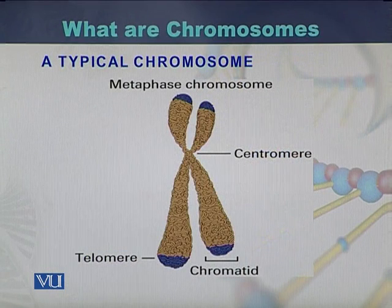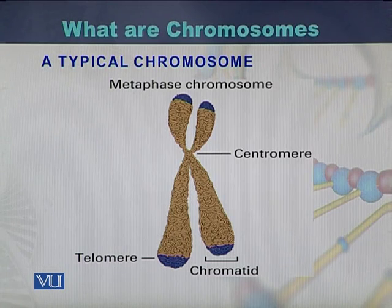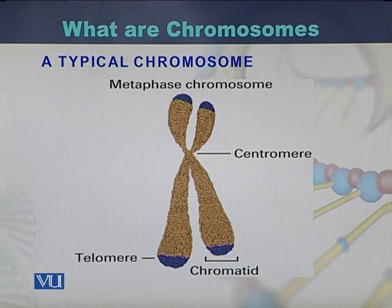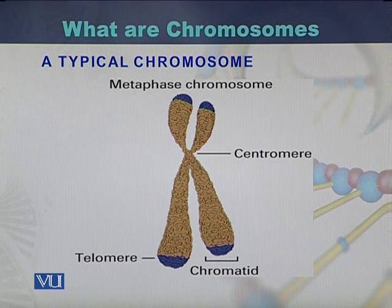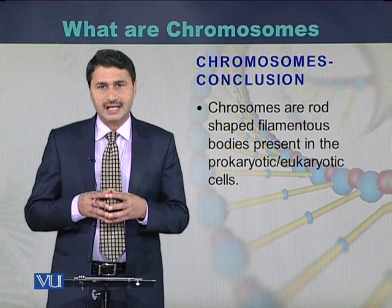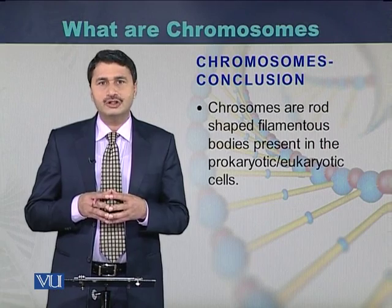This is the typical structure of a chromosome. There are two arms — the upper arms are short and called P arms. In the middle there is a constriction called the centromere. The longer arm is called the Q arm. Both filaments are called chromatids. Chromosomes are rod-shaped filamentous structures present in both prokaryotic and eukaryotic cells.